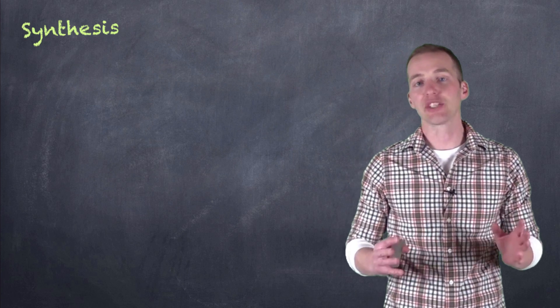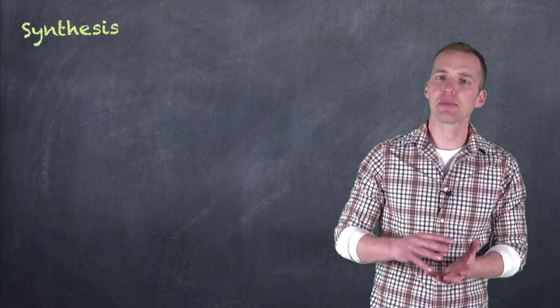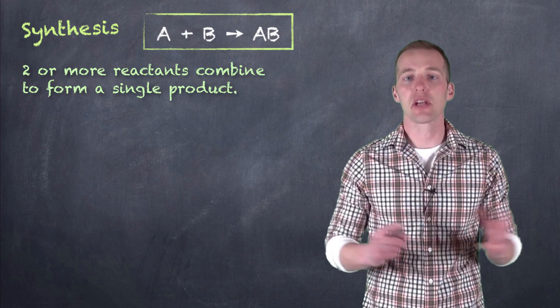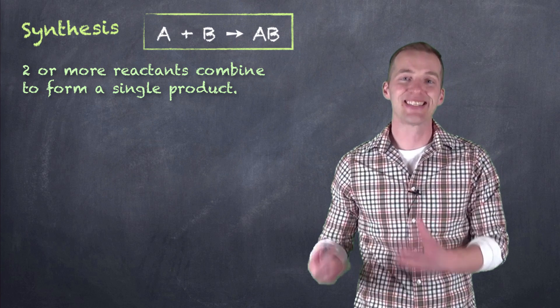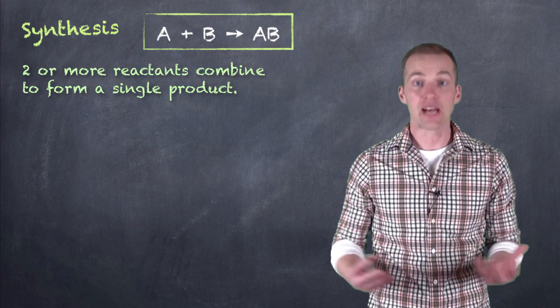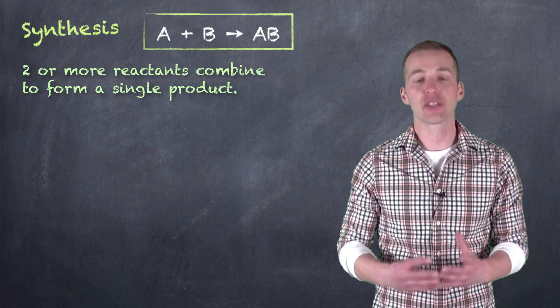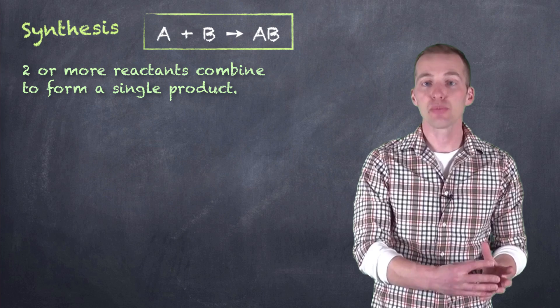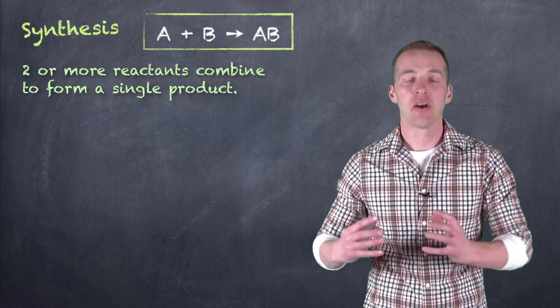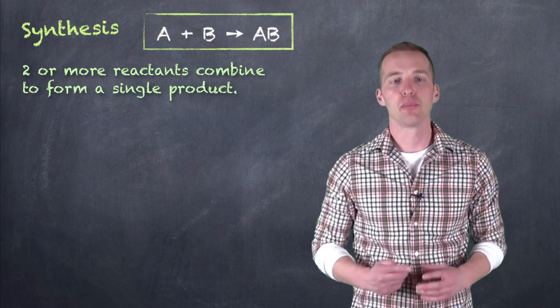The other type of reaction I want you to be able to identify is kind of the flip side of this. That is, when two smaller substances come together to form a larger one. Since a larger substance is being synthesized, we classify this as a synthesis reaction or sometimes as a combination reaction. So effectively, when we have two smaller products combining or synthesizing a new product.